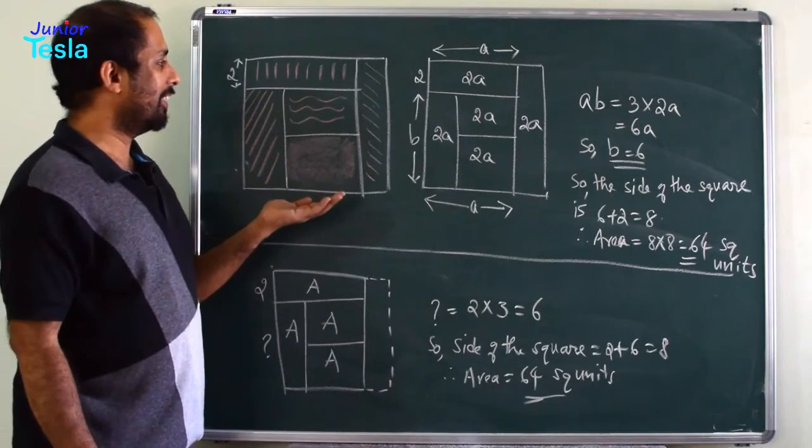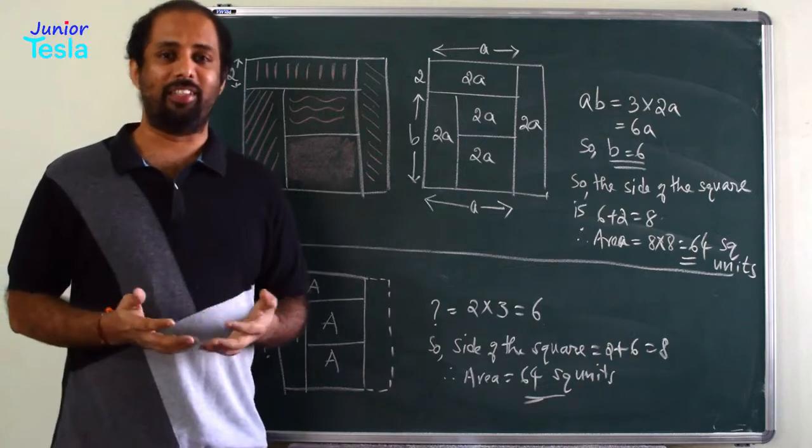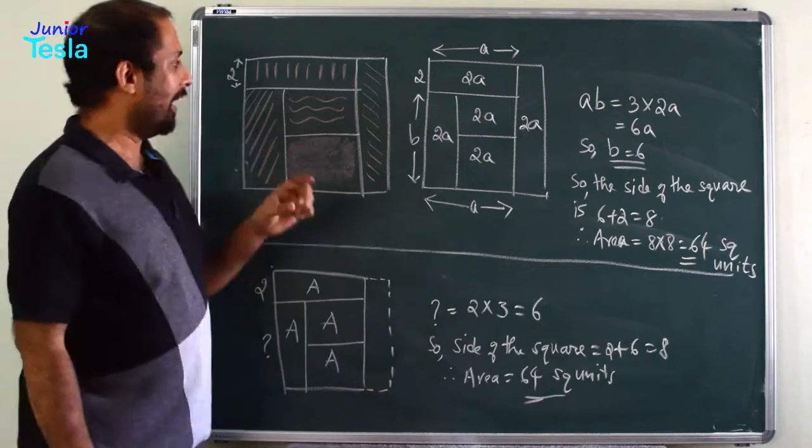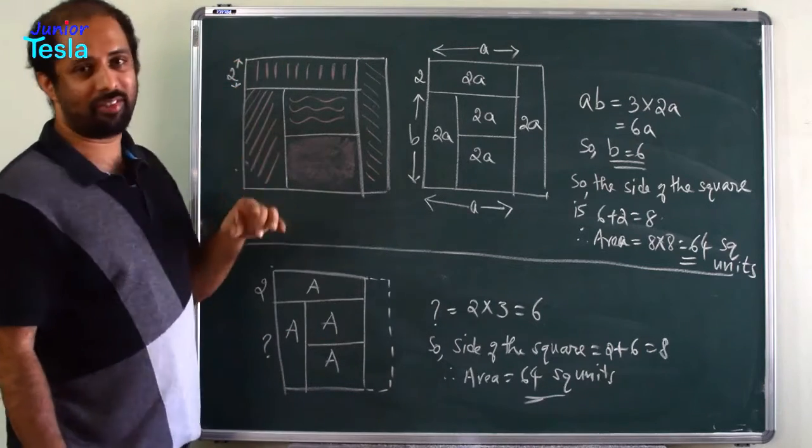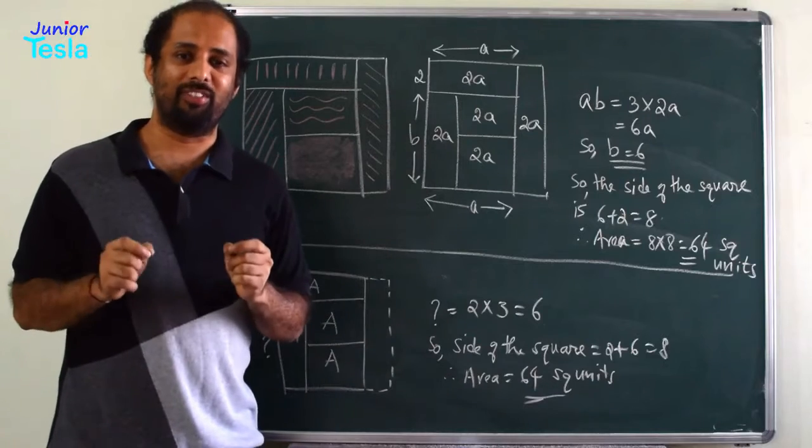The problem is, there is a square which is divided into 5 regions of equal area and this length is given, it is 2 units. You have to find the total area of the square.